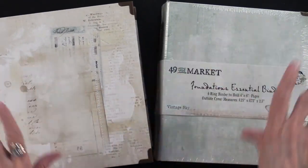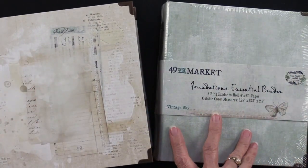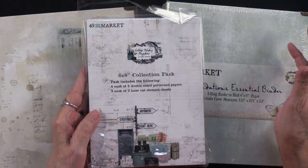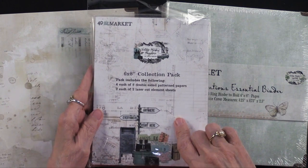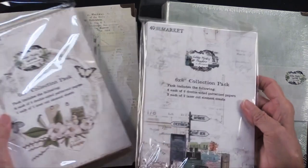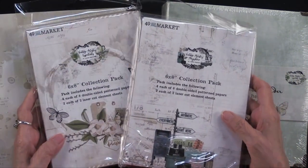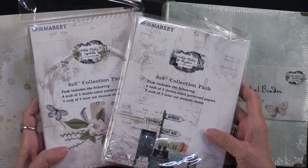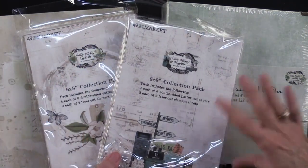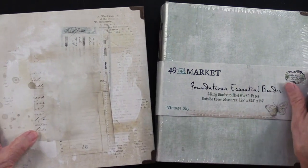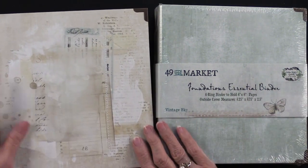Now, all of these albums are going to use the six by eight papers. Now, you can use any papers, of course. The 49th and Market, there is the Anywhere collection. And also the Essentials collection. And there's die cuts. There's washi tape. There are epoxy pieces. There's even laser-cut acetate. So lots of things that you can do with these wonderful products.